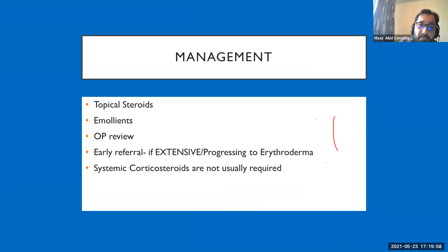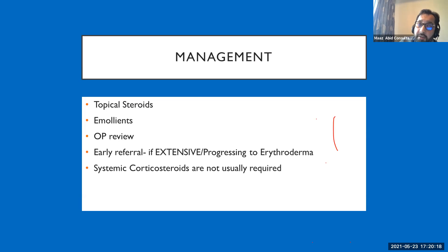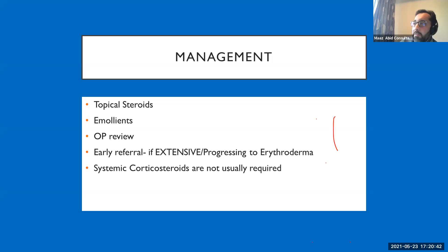For psoriasis management, start with topical steroids such as betnovate or dovonate, plus regular emollients, and refer to dermatology as an outpatient. If extensive, erythrodermic, or deteriorating rapidly, refer urgently — inpatients should be referred to the on-call registrar. Crucially, do not start systemic steroids in suspected psoriasis, as withdrawal causes a severe rebound flare. Always speak to a dermatologist before considering oral steroids.